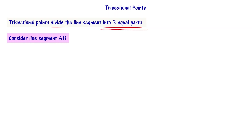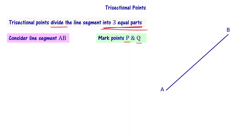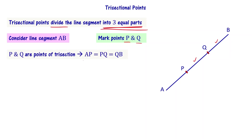Let us say I have a line segment AB. We need to divide it into three equal parts, so we need two points on that line segment — let us call them P and Q — and mark them on AB.